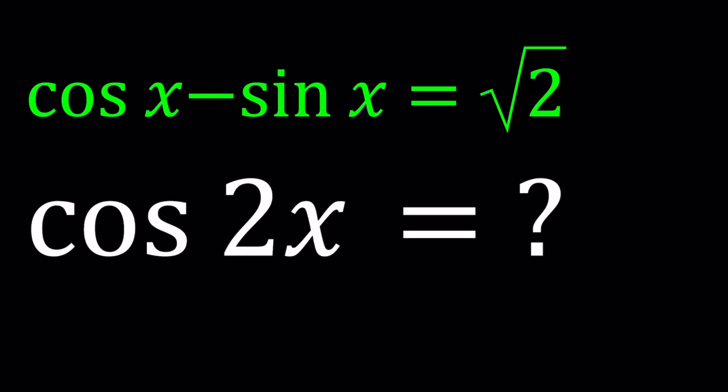Hello everyone. In this video we're going to be solving a trigonometric equation, actually evaluating a trigonometric value too. So we have cosine x minus sine x equals square root of 2 and we're supposed to evaluate cosine of 2x. I'll be presenting two methods and let's go ahead and take a look.